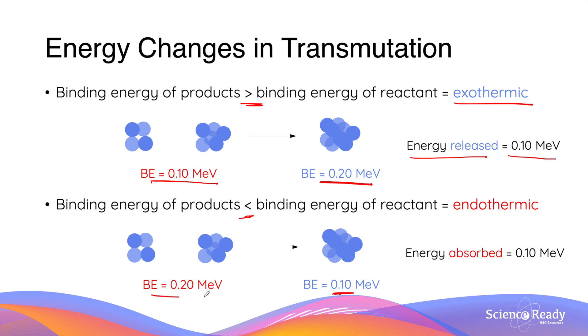This results in a net energy of 0.1 MeV being absorbed by the reaction. This is why when the binding energy of the products is less than the binding energy of the reactants, the reaction or transmutation absorbs energy and is considered endothermic. This concludes the video on mass defect and binding energy.